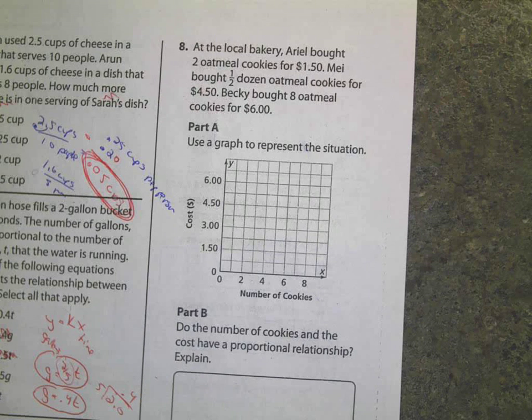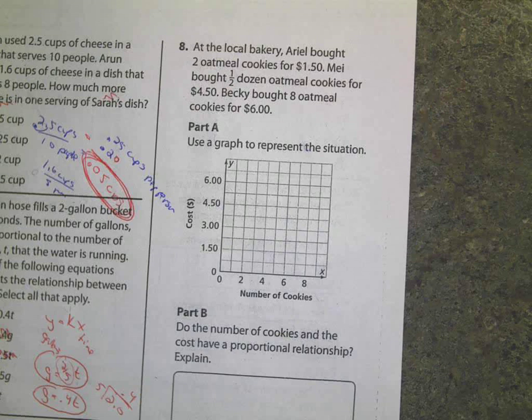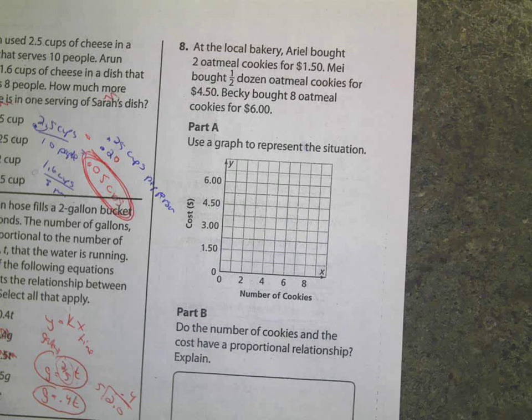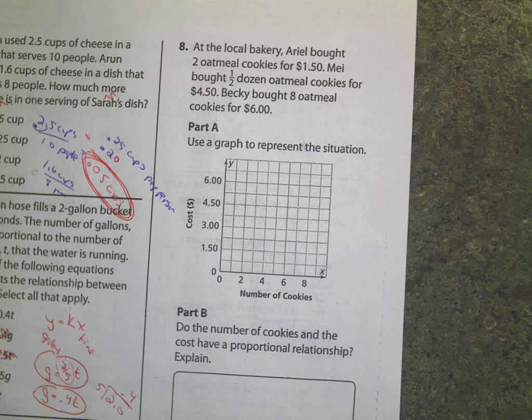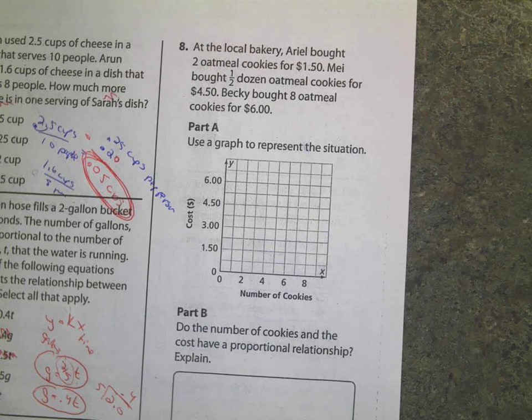Okay, I'll be asking for volunteers. At the local baker's store, Ariel bought two oatmeal cookies for $1.50. Mel bought a half a dozen oatmeal cookies for $4.50. Becky bought eight oatmeal cookies for $6. Use a graph to represent the situation.